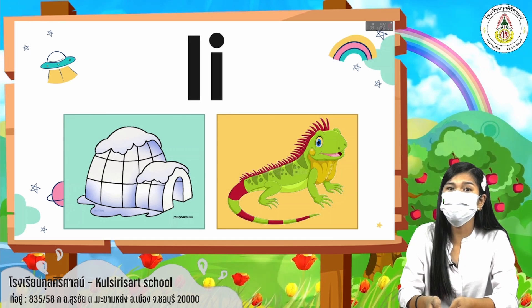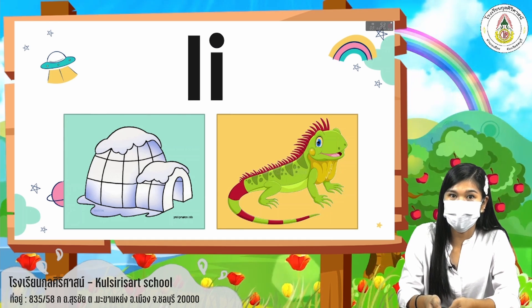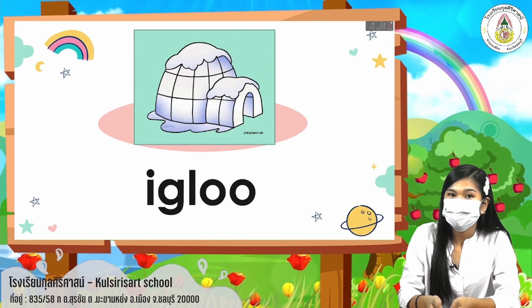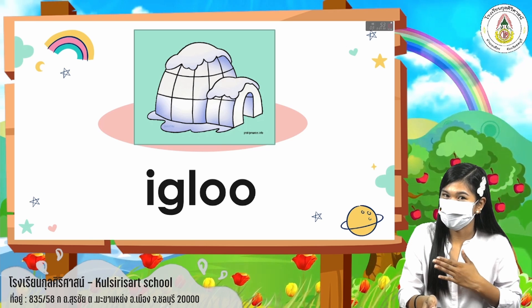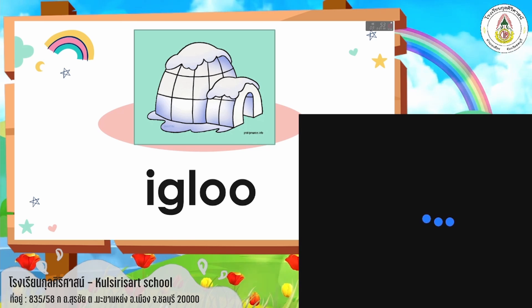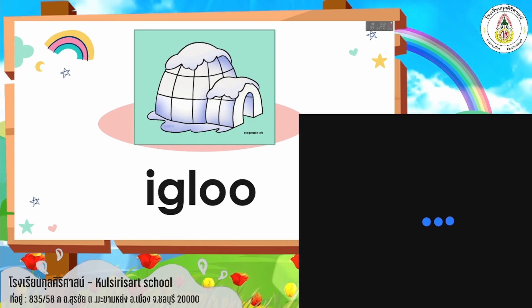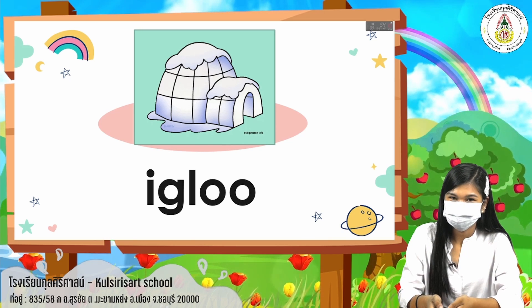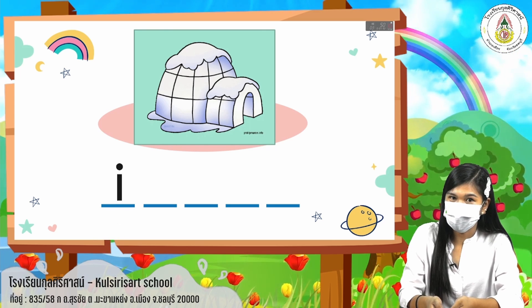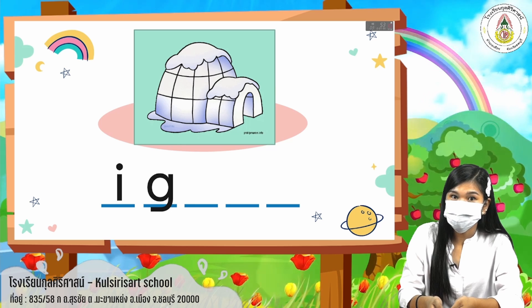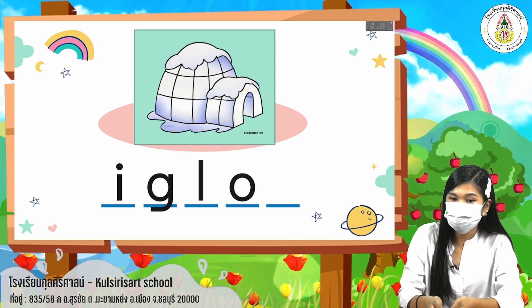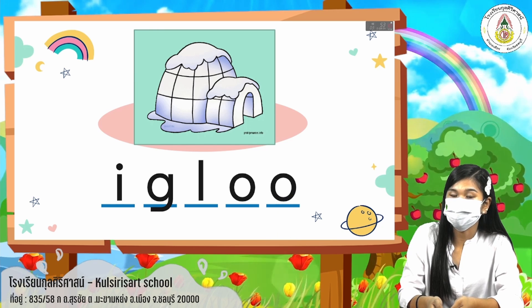I have here two pictures that start with the letter I. First one, we have that picture — we call it igloo. Say it with me: igloo. Now let's spell it out. Of course, it starts with the letter I, G, L, O, O. Now let's read it again: igloo. Good job.